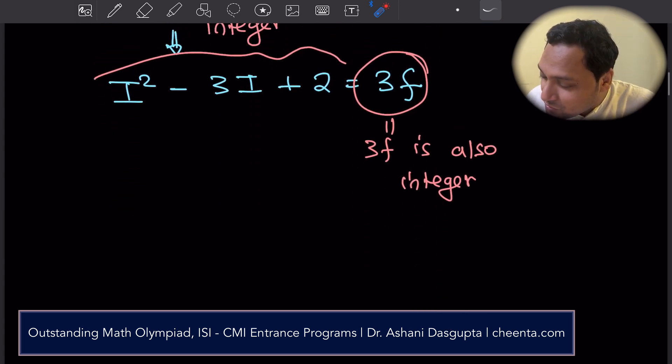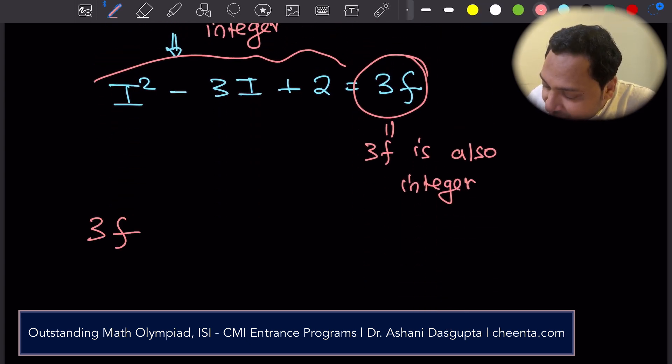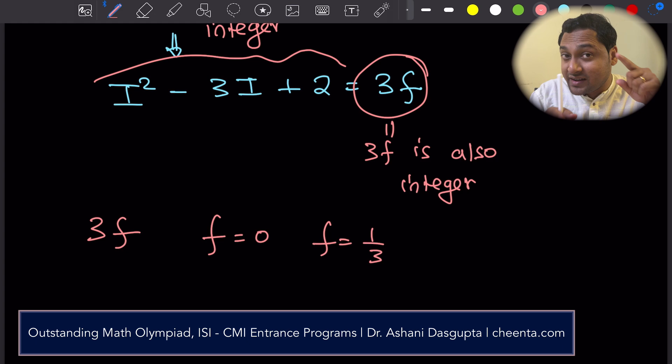So how do you go about it? How can 3f be an integer? Well, there are only three cases. f equal to 0, the fractional part can be 0. f equal to 1 over 3, then 3 times 1 over 3, that 3 and 3 cancels off. Or f is equal to 2 over 3. That's all. You have to have a denominator of 3 in order to cancel the 3 off. Otherwise, 3f can never be an integer. So these are the only three possibilities. f equal to 0, f equal to 1 by 3, f equal to 2 by 3.